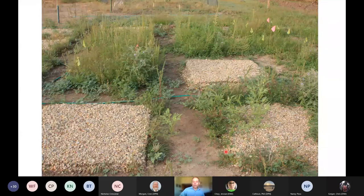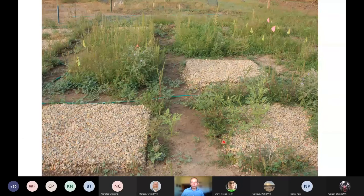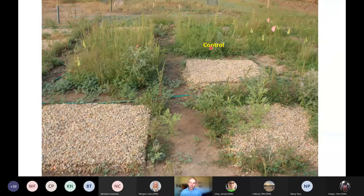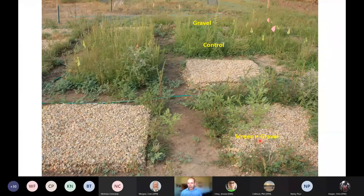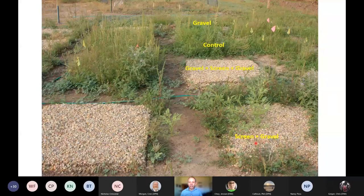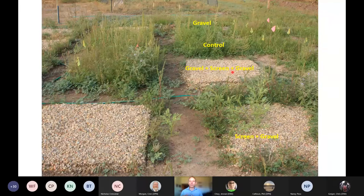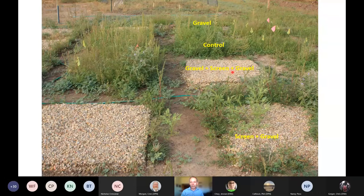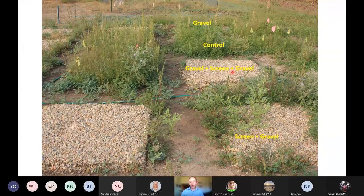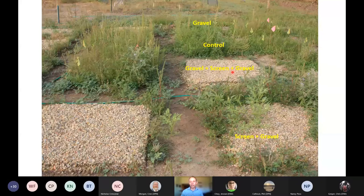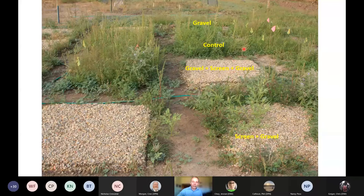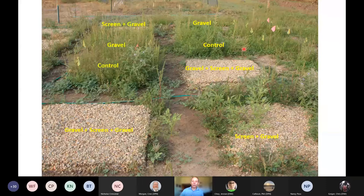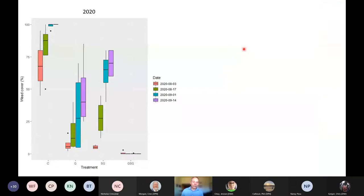So we tried another experiment where we, instead of using mulch, we used a landscaping gravel. And in this case, we have a control here. So very weedy control plot. We had gravel only. We had the screen lying on the ground covered with gravel, and the screen was hooked up to electricity. And then the one that really worked for us was we basically made a screen sandwich. So we had gravel screen, gravel on the ground with the screen on top of it. And that was covered with more gravel. And the gravel on the soil surface prevents the screen from directly contacting the soil surface. And the gravel covering the screen is to protect people or animals from stepping on that screen. And we had multiple replications of this set of treatments. And I'll just show you some more graphs here.